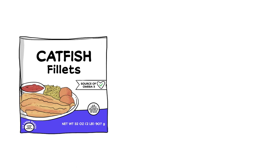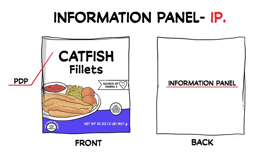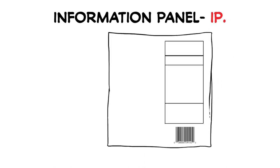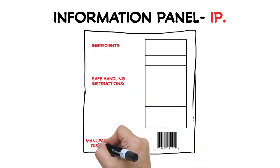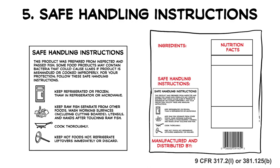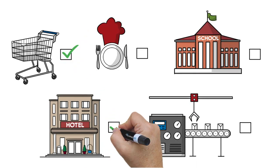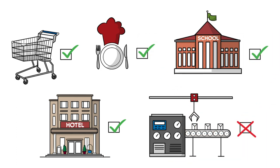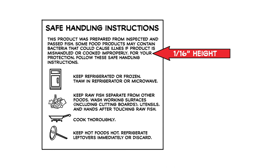Now that we've covered what is required on the PDP, let's talk about the information panel, or IP, which is immediately to the right of the PDP or on the back of a vacuum pack bag. The remaining features may be placed on the IP or PDP, and include safe handling instructions, an ingredient statement, name and address of the manufacturer or distributor, and nutrition labeling. If catfish is raw or not ready to eat, then additional safe handling instructions are required. More specifically, these instructions are required if fish is destined for retail, hotels, restaurants, and institutions, but not on products shipped for further processing at an official USDA establishment.